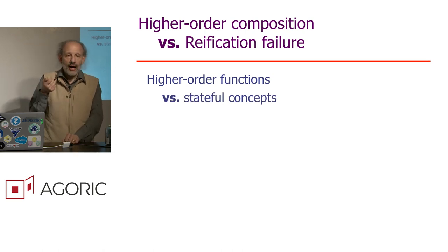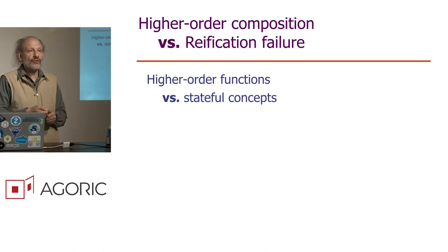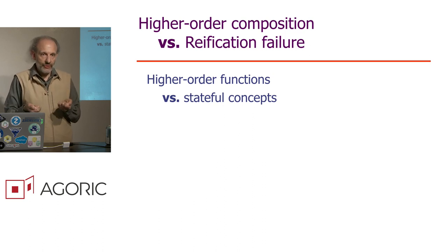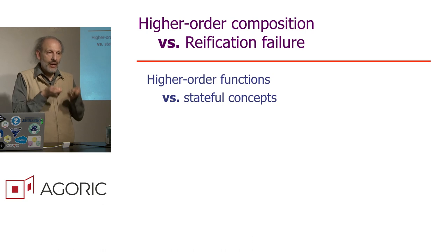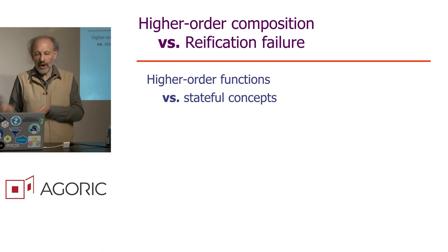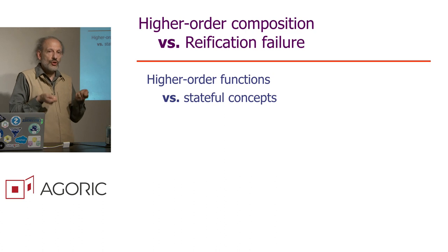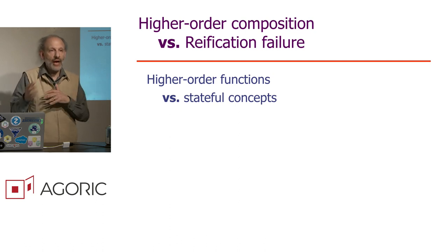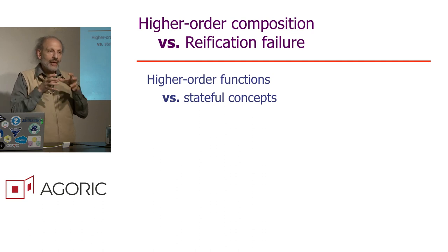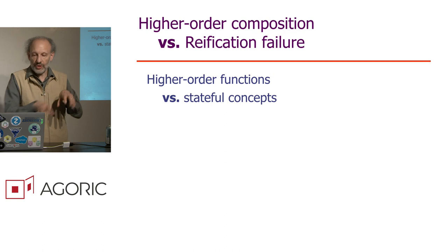However, functional programming works specifically with mathematical-like functions with no side effects. The world has stateful concepts, like a bank balance. You can't take a mutable bank balance and reify it as an object that plays within the world of higher-order composition. You can write patterns of functions and engage with monads and state passing that create a new level of abstraction, but you can't simply apply a function to a stateful object and have it be the same stateful object after it changes state.